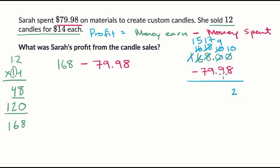And now I'm ready to subtract. 10 hundredths minus eight hundredths is two hundredths. Nine tenths minus nine tenths is no tenths. And then 17 ones minus nine ones is eight. And then 15 tens minus seven tens is going to be equal to eight. And so then we have 88 dollars and two cents.